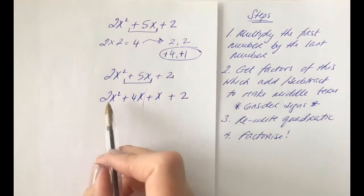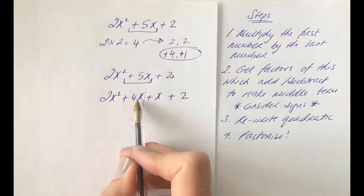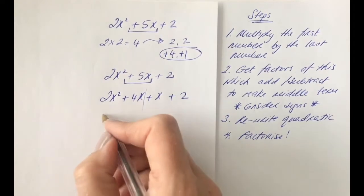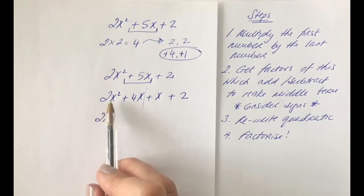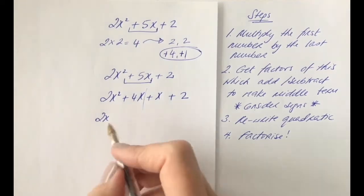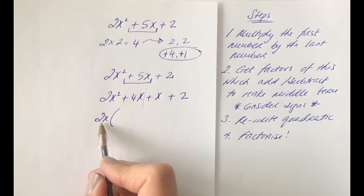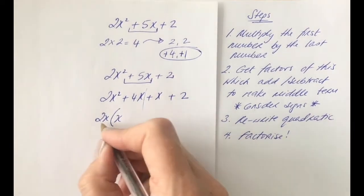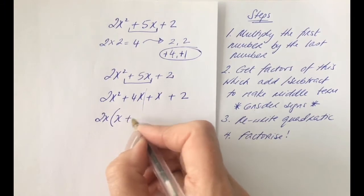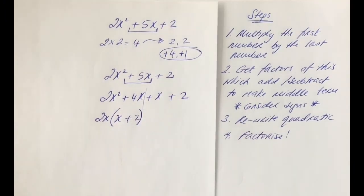So now, split and factorize. Common to 2x squared and 4x is a 2x. Both 2, 2 can go into both 2 and 4 and there's an x in x squared and x. So pull it out. What would you have to multiply to 2x to get 2x squared back? You need to multiply by an x. And what would you have to multiply to 2x to get 4x? We need to multiply by a 2.